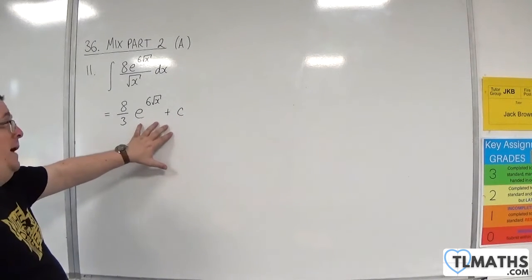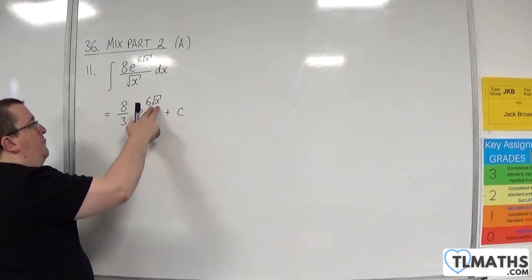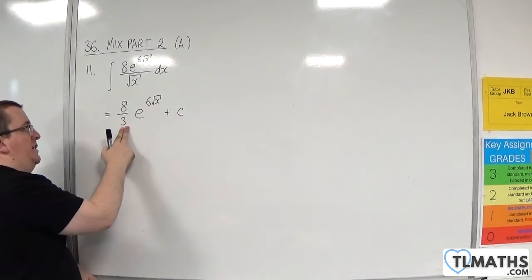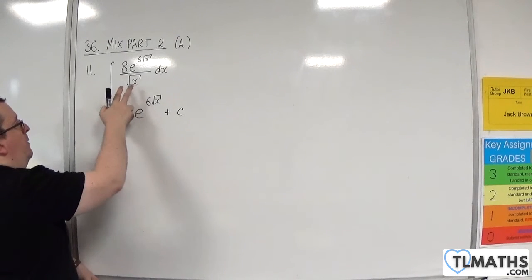So if you differentiate this back, 6 root x differentiates to 3x to the minus a half, which multiplies with the 8 thirds to make 8x to the minus a half, which is 8 over root x.